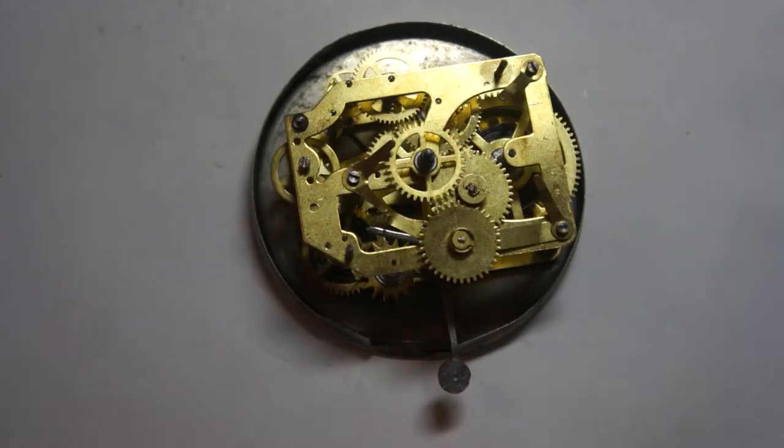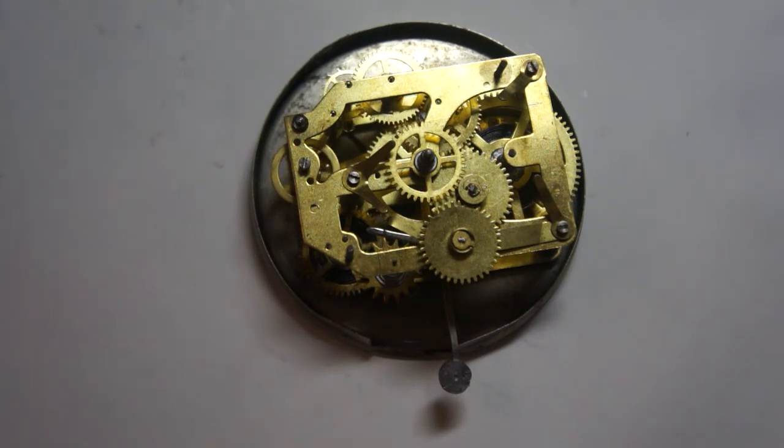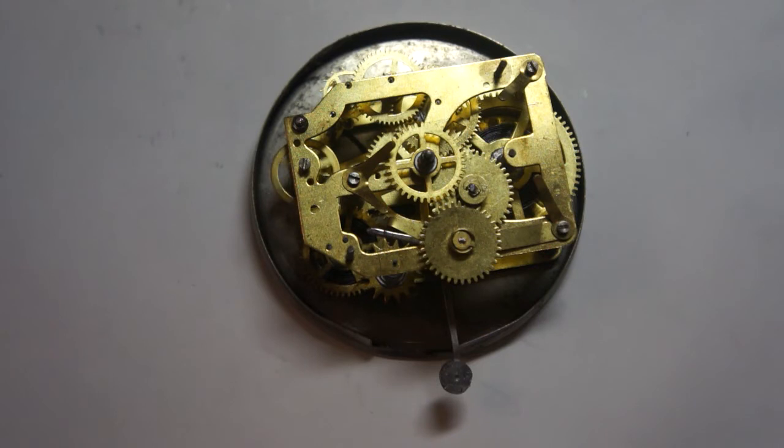When these were first made in the early 1900s, the clock manufacturer, Western Clock Company, their recommended cleaning instructions were to remove the balance wheel and spring. And then they said to take the movement and soak it in gasoline and brush it with a brush, then remove it and let it dry and then lube it up. So I'm certainly not going to clean them in gasoline. Just goes to show you how times do change.